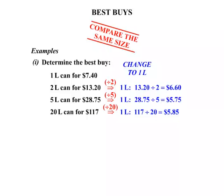So now we have got them all at the 1L size. Let's compare their prices. We can see that $5.75 for the 1L equivalent is the cheapest, and that was the 5L can. So therefore the best buy is the 5L can.